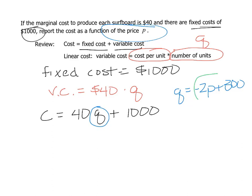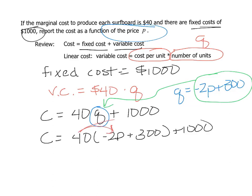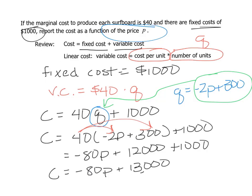We could take this formula that we found here and just plop it into our function. I'm going to distribute that 40 and collect like terms. We end up with C equals negative 80P plus 13,000.